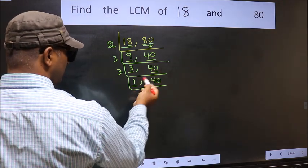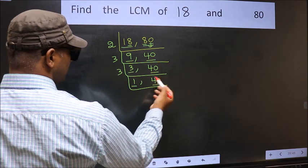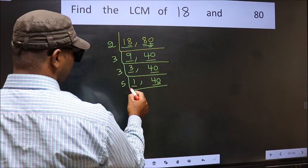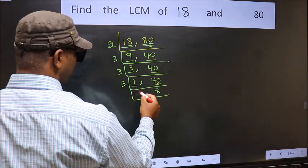We got 1 here so focus on the other number 40. Last digit 0 so I take 5 here. When do we get 40 in 5 table? 5 times 8 is 40.